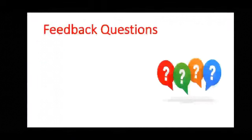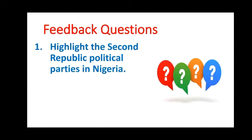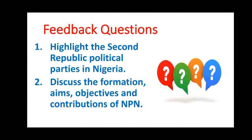Feedback questions: one, highlight the second Republic political parties in Nigeria; two, discuss the formation, aims, objectives, and contributions of NPN. If you don't understand these questions, you can watch the video over and over again, then provide answers. Now let's look at another political party within the second Republic, which is UPN — the Unity Party of Nigeria.